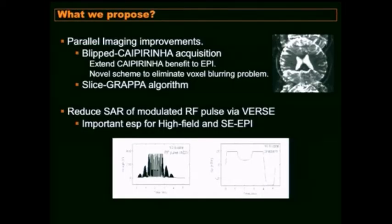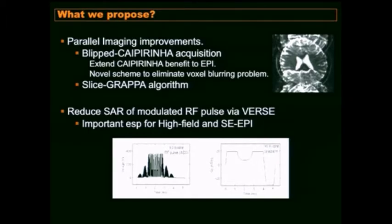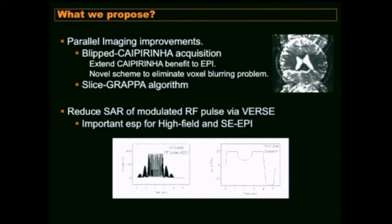I propose improving the parallel imaging method to achieve the blip-CAIPIRINHA effect for EPI without the voxel blurring problem. That covers the acquisition part. I also propose a Slice-GRAPPA algorithm to reconstruct these collapsed images. Finally, we want to control the SAR — specific absorption rate — since exciting multiple slices at once deposits more RF energy. The RF pulse must be designed to give good excitation without too much SAR penalty. I'll focus on the first two topics for this part of the presentation.